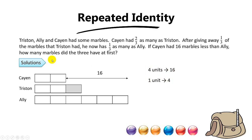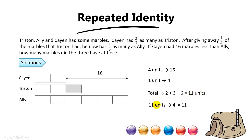The question asks for the total marbles they had at first. You take two plus three plus six to get eleven units. Eleven units times four gives you a final answer of 44 marbles.